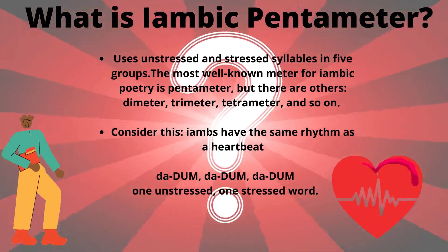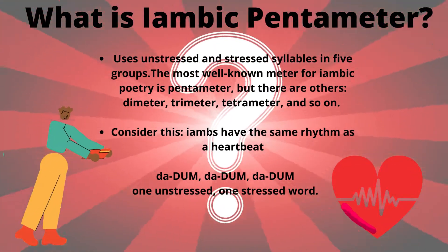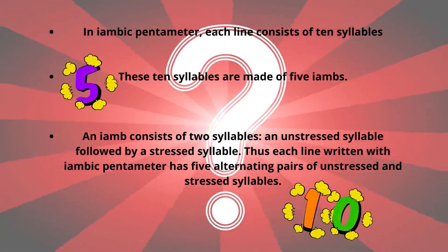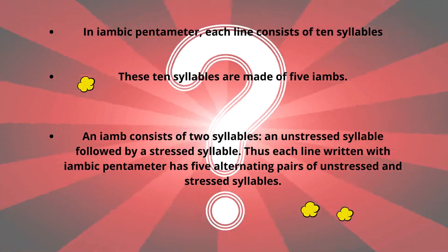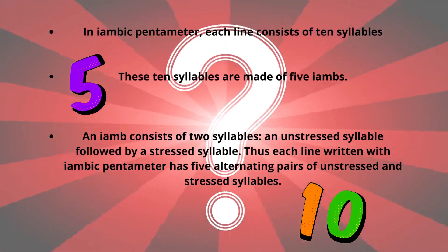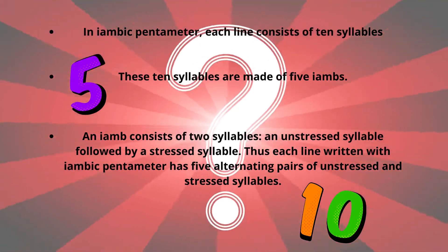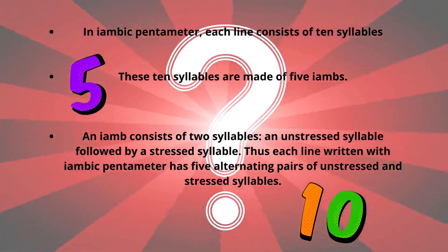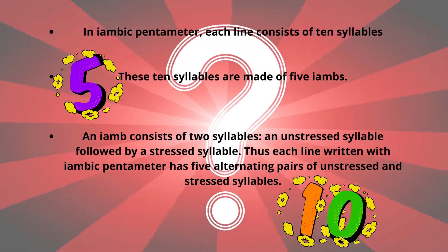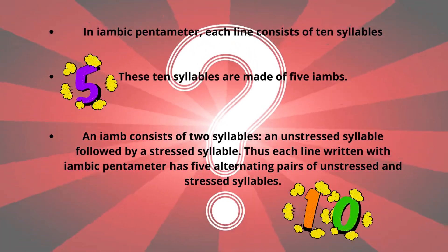Iambs have the same rhythm as a heartbeat: da-dum, da-dum, da-dum — one unstressed, one stressed word. In iambic pentameter, each line consists of ten syllables. These ten syllables are made of five iambs. An iamb consists of two syllables: an unstressed syllable followed by a stressed syllable. Thus, each line written with iambic pentameter has five alternating pairs of unstressed and stressed syllables.